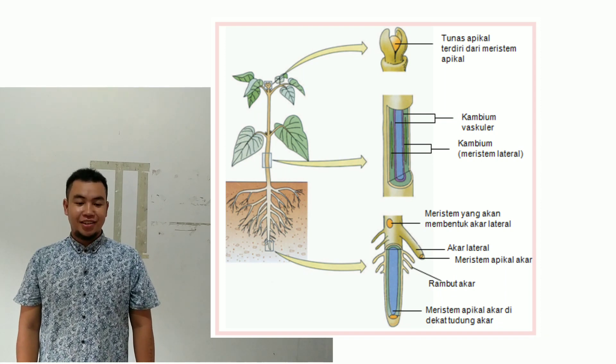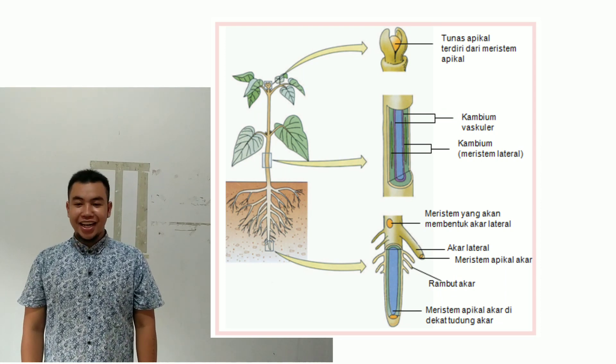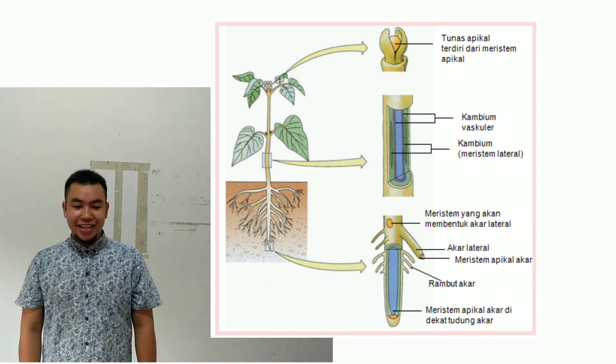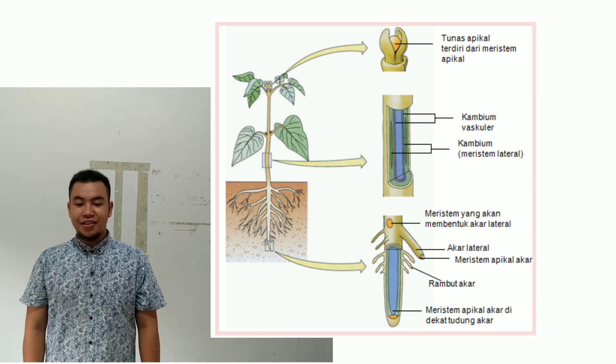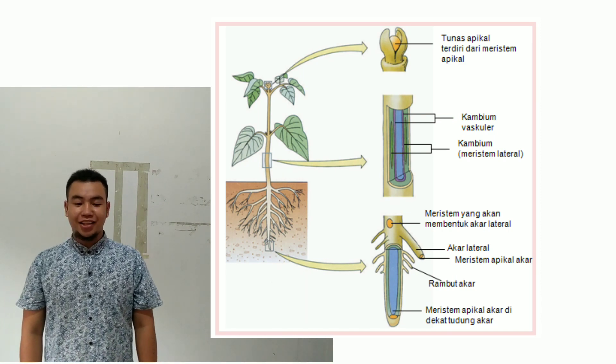Jaringan meristem lateral menyebabkan bertambahnya ukuran diameter batang. Pertumbuhan ini disebut pertumbuhan sekunder.